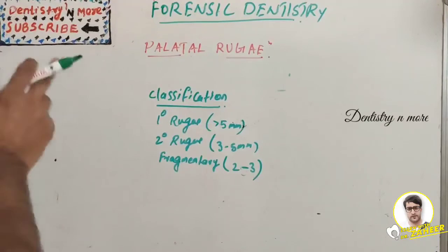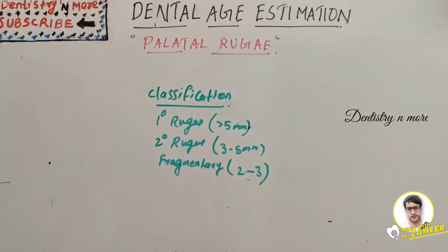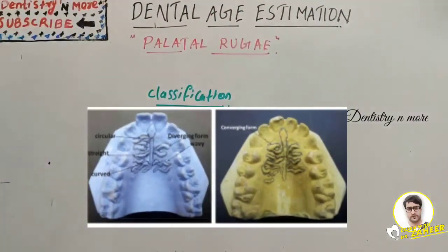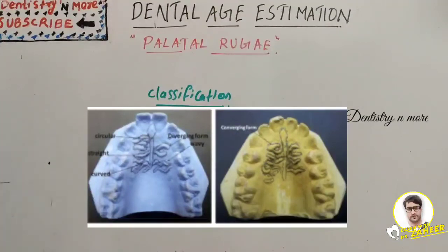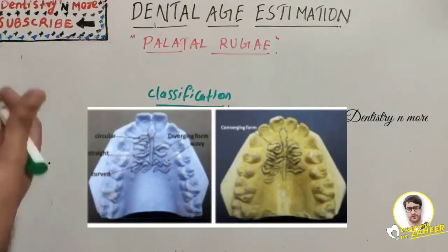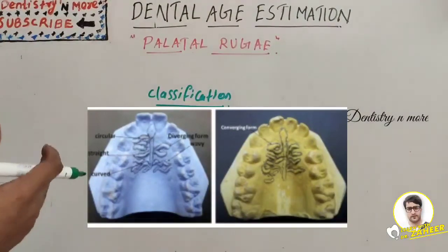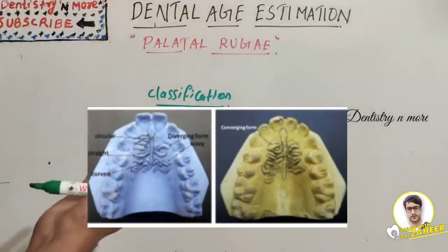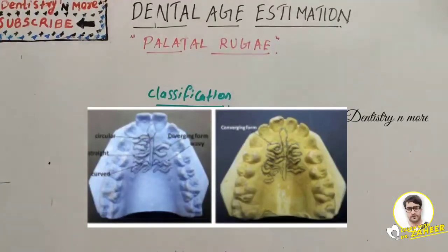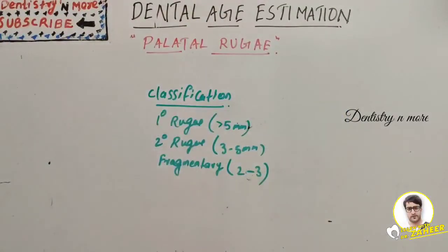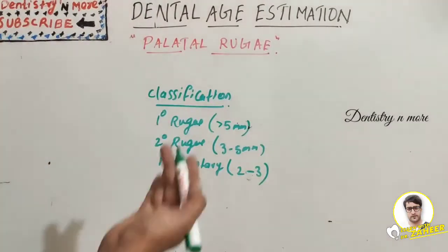Palatal rugae are the ridges on the anterior part of the palatal mucosa on each side of the mid-palatal raphe, behind the incisive papillae. They are a useful method of identification. The rugae pattern on a deceased person's maxilla or maxillary denture can be compared to old dentures. These palatal rugae are well protected by the lips, cheeks, tongue, buccal pad of fat, and teeth in incidents of fire and high-impact trauma.